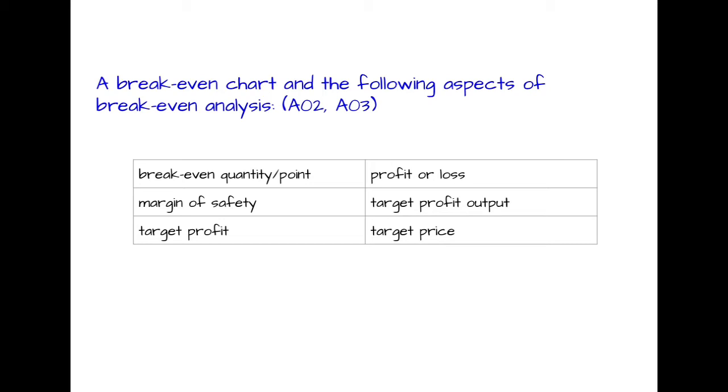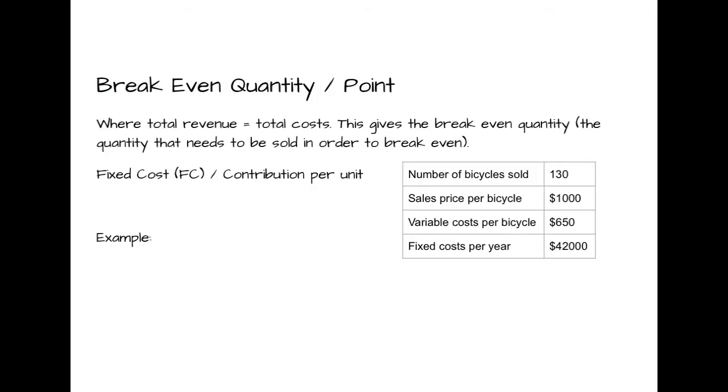So these are what we're looking at from the IB business learning objectives. These are our AO2 and AO3. For our break-even quantity, our break-even point, this is just telling you exactly the number of units that you need to sell in order to break even, or in order to have your revenue equal your total variable and your fixed costs. And your variable costs will depend on how many you sell. So for this, our fixed costs we have here are $42,000, and then our contribution per unit was again $1000 minus $650. So that's $350. And that there is going to get us 120 bicycles. So that tells us we need to sell 120 bicycles in order to cover all of our costs, our fixed costs and our variable costs.